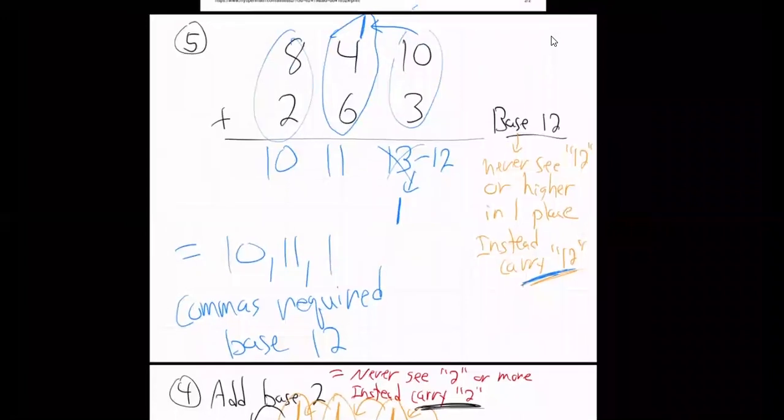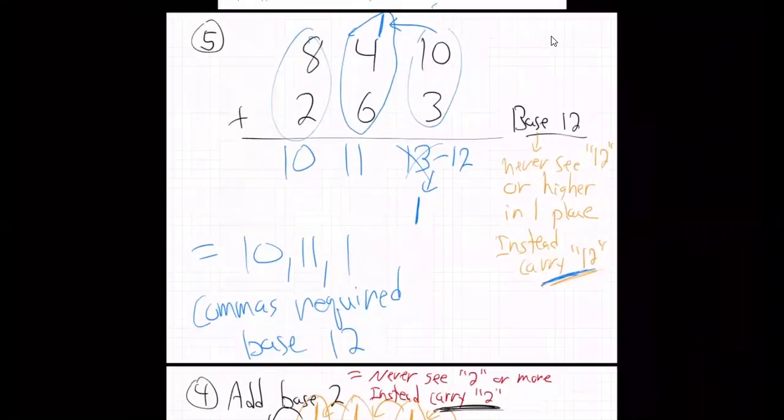Because otherwise, how would you know if this 10 and 11, is it a 1 and a 1 and a 1 and a 0 using up like four different places? Or is the whole 10 in one place and the whole 11 in another place? Yes, that's how it is.